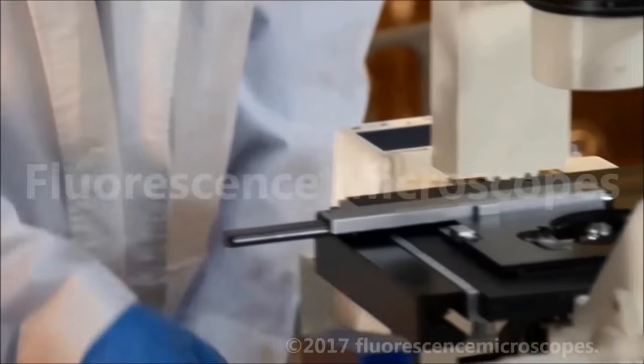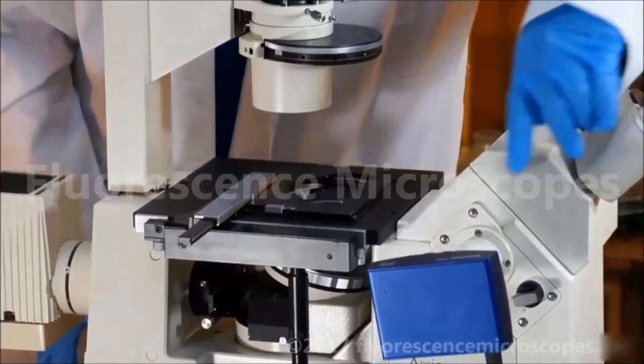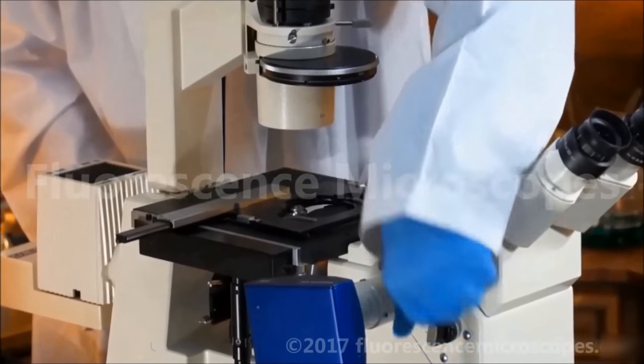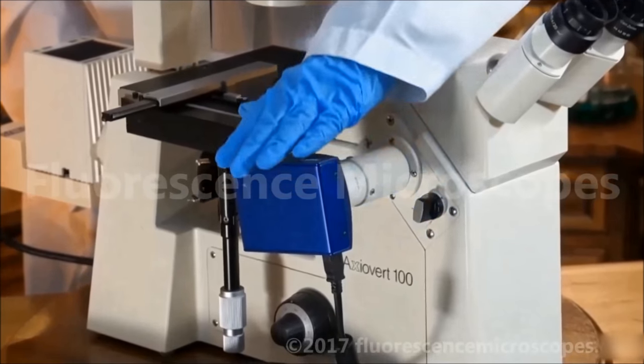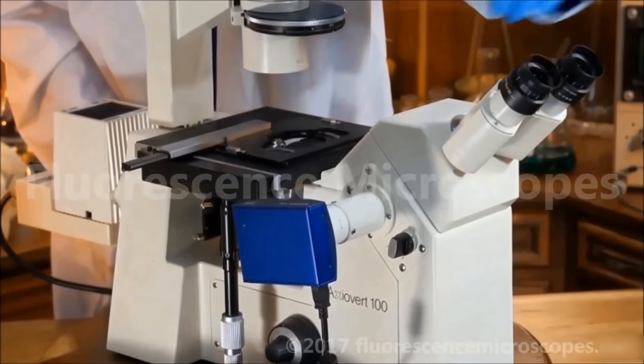This knob is for taking the image to either the eyepieces or the trinocular photoport. Turn it one direction, and it goes to the photoport with 70% to the photoport, 30% to the eyepieces.